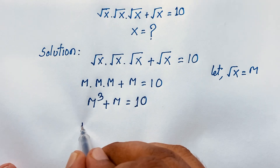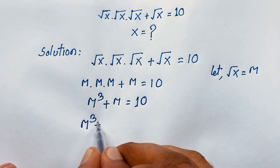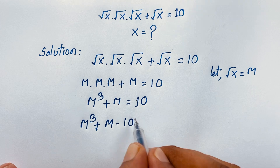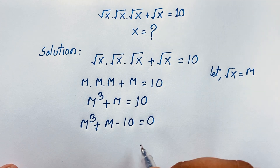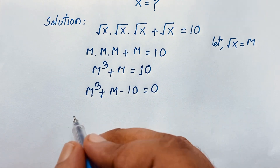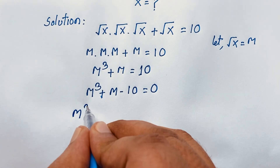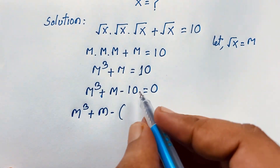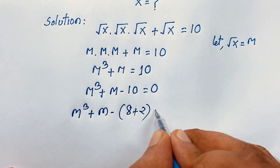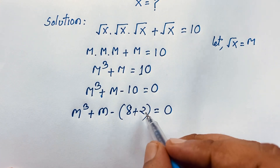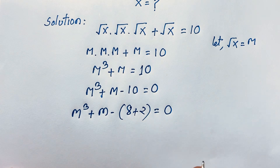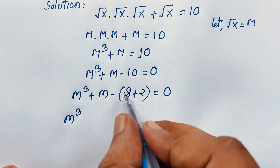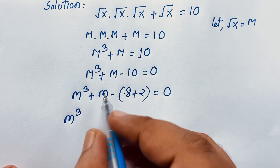Now here, m³ + m, and if I move 10 to this side it will be negative 10. I split 10 as 8 plus 2, which equals 10. So we have m³ plus m minus 10 equals 0, and since 8 plus 2 equals 10, this is positive and this is negative.